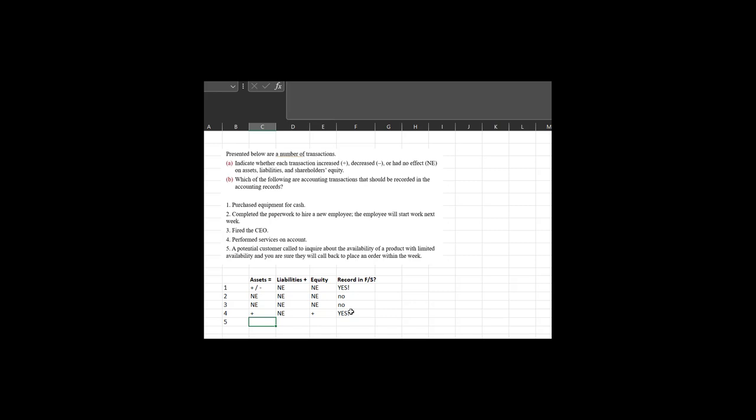A potential customer called to inquire about the availability of a product with limited availability, and you are sure they will call back to place an order within a week. Well, surely they will call back, and when they do, and when they purchase something, then we can talk about economic events. But right now we do not have an economic event. We can't increase our assets based on a phone call. We owe nobody nothing based on a phone call. We haven't earned or incurred any expenses based on a phone call and a potential that somebody might call us back. So we had an event. We had a customer. But we didn't have an economic event, which means we don't have anything to record on our financial statements.